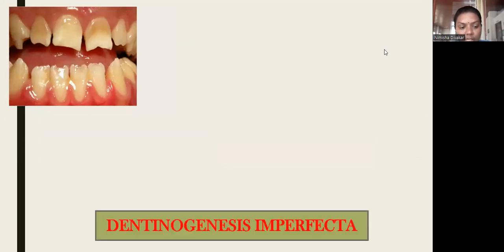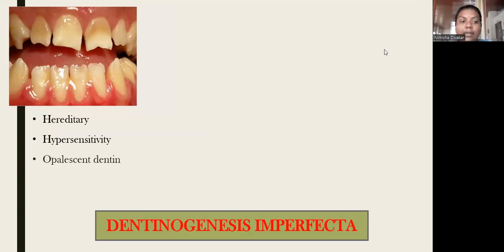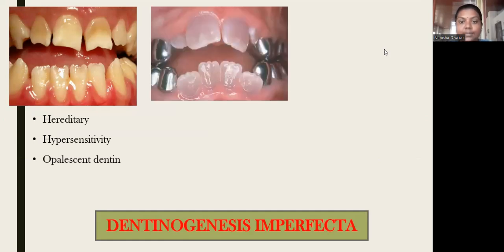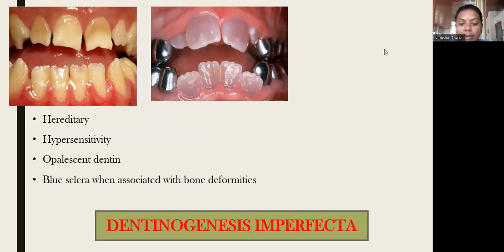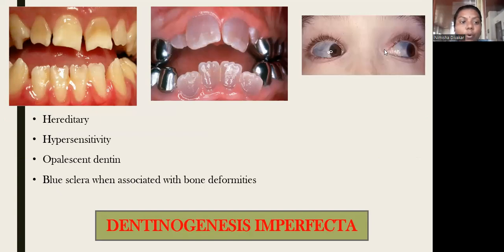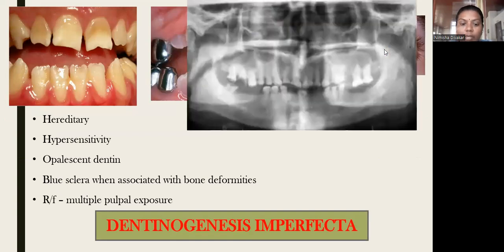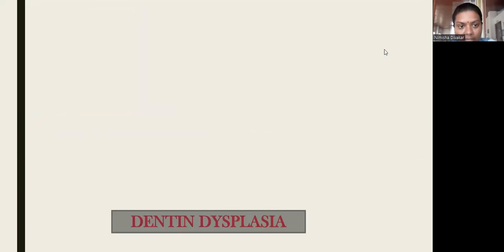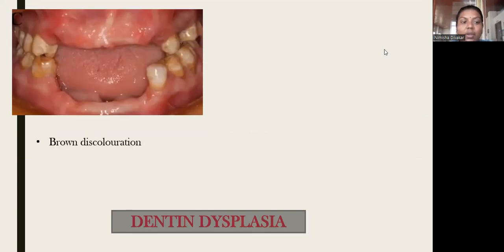Next is dentinogenesis imperfecta. It is also hereditary. There will be hypersensitivity of the tooth, and the dentin will be opalescent — that is, translucent. There will be blue sclera if it is associated with bone deformity. Radiographically, there will be multiple pulp exposures due to defective dentin formation. Next is dentin dysplasia — a condition in which teeth will have brown discoloration. Primary and permanent dentitions are clinically normal, but radiographically there will be thistle-shaped or tulip-shaped teeth.